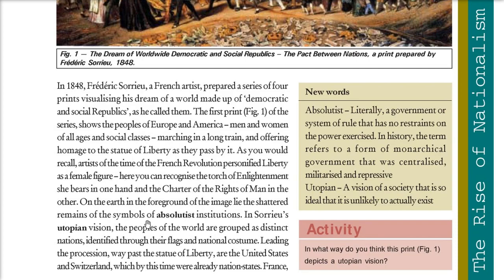In the foreground, you can see the shattered remains of symbols of absolutism — nirankush — which literally means a government or system of rule with no restraints on power being exercised, with no real role for the people. In history, this term refers to a form of monarchical government that was centralized, used military power, and was often repressive.